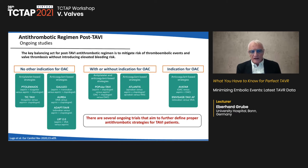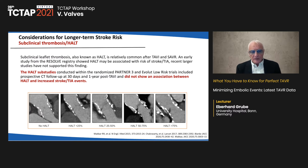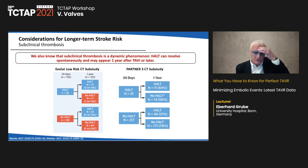The key balancing act for post-TAVR antithrombotic therapy is to mitigate thrombotic events and valve thrombosis without elevated bleeding risk. Regarding subclinical thrombosis or HALT: studies within the randomized PARTNER 3 and Evolute low-risk trials did not show an association between HALT and increased stroke or TIA events. HALT is a very dynamic phenomenon — it can resolve spontaneously and may appear one year after TAVR or later.